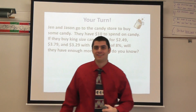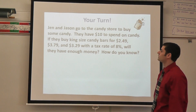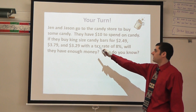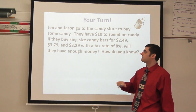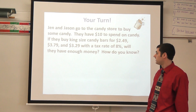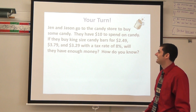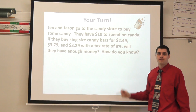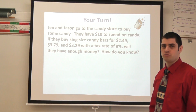Good news is now it's your turn, and I've given you a doozy of a problem to try. Jen and Jason go to the candy store to buy some candy. They have $10 to spend. If they buy king-sized candy bars for $2.49, $3.79, and $3.29 with a tax rate of 8%, will they have enough money? How do you know? Show your work and explain. Look at what you know and what you're trying to find out. Go ahead and make sure you have your smartphone or calculator ready, and paper and pencil. Go ahead and pause the video — we'll see what you come up with.